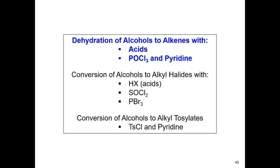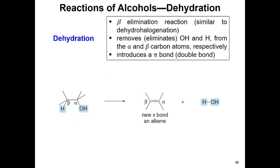In the next slides, we'll focus on reactions involving alcohols and how to convert them into alkenes, alkyl halides, and alkyl tosylates. The first reaction is called dehydration, where an alcohol is converted to an alkene. Dehydration is analogous to dehydrohalogenation — a beta elimination reaction — except instead of removing a hydrogen and a halogen, we remove a hydroxy group and a hydrogen from the alpha and beta carbons, introducing a pi bond between them.